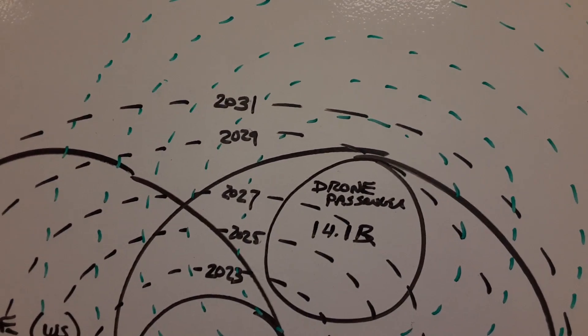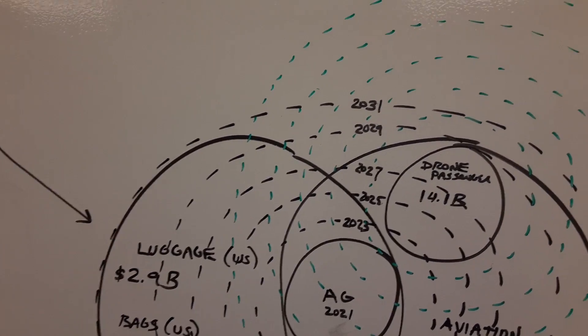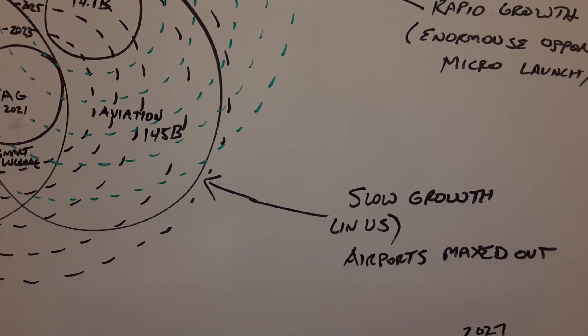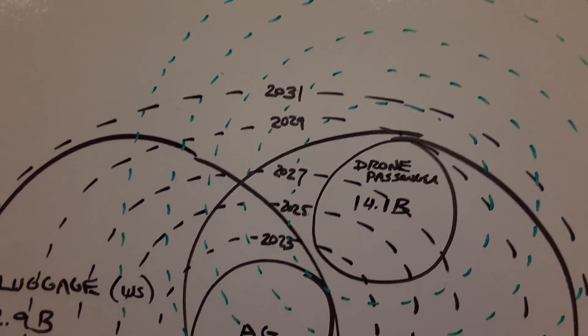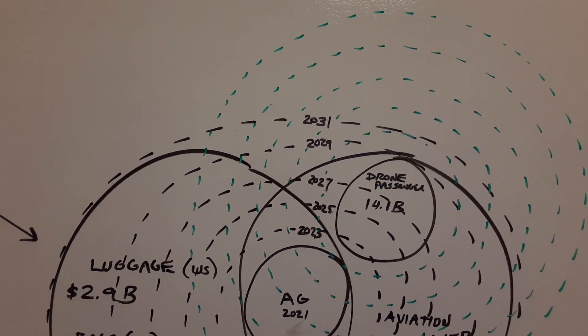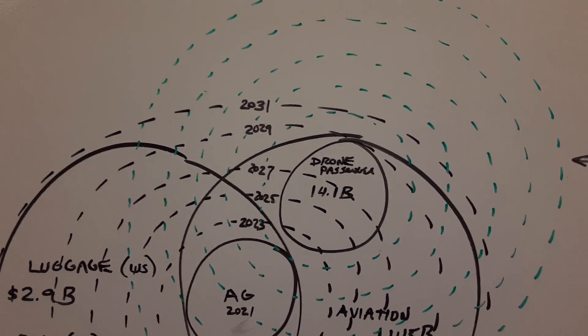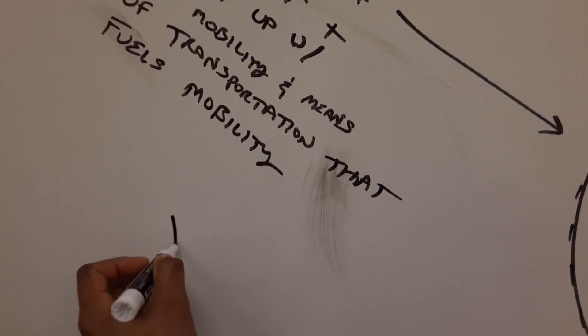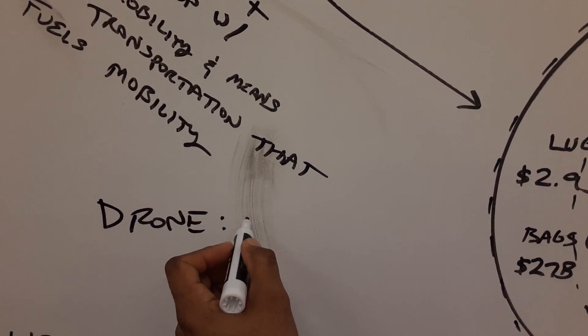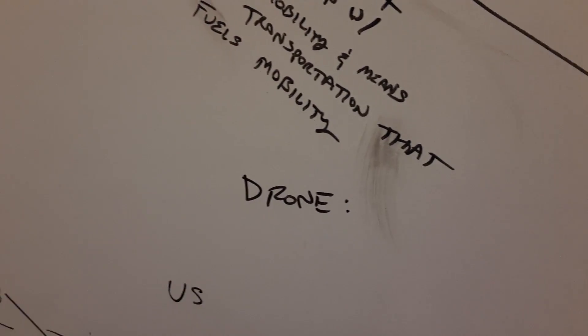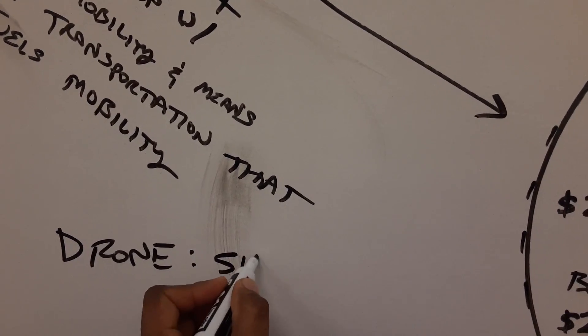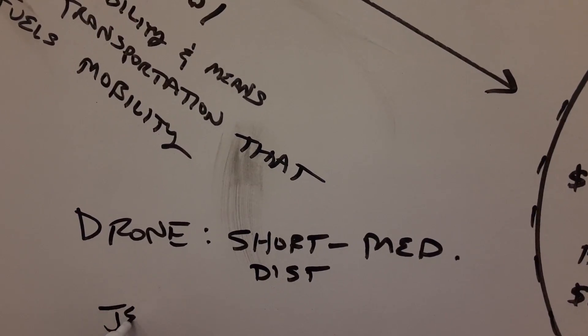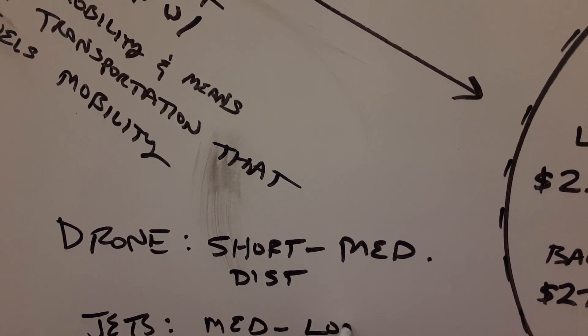The reason why this drone passenger emerging market is going to be good is because the cost to operate these things is going to be extremely efficient because it's an alternate fuel. You're going from a market with jets operated on fossil fuels to a drone passenger market based on electric propulsion and electric engines. For drones, they're projected to do short to medium distances, and the jets are doing medium to long distances.